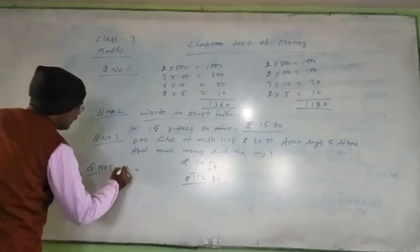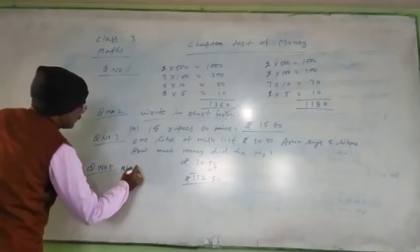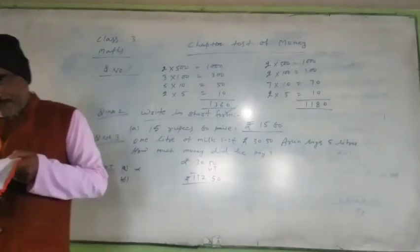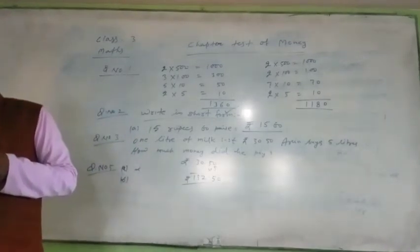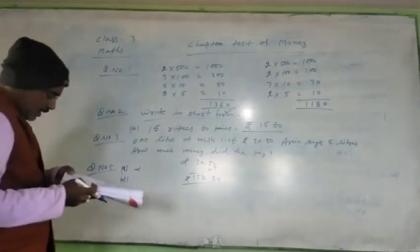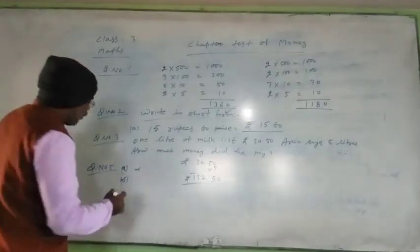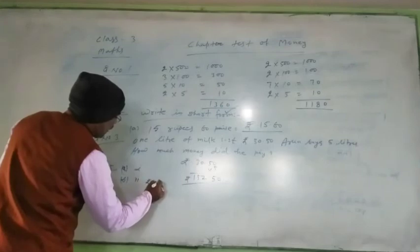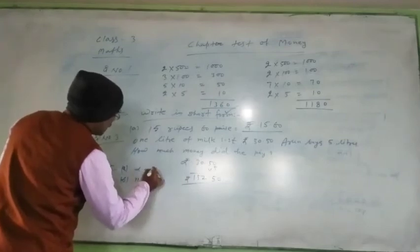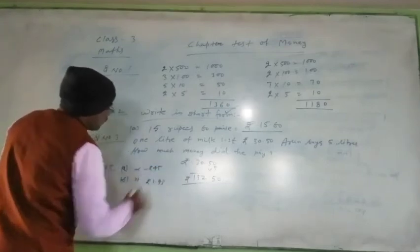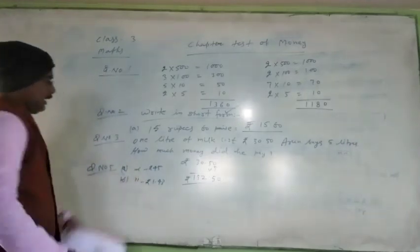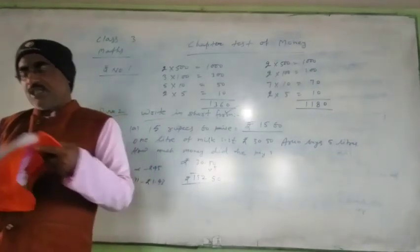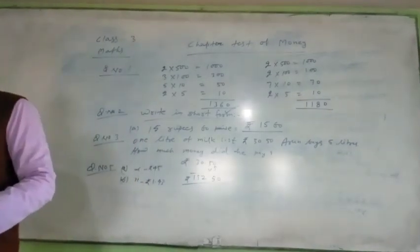Part B: 143 paise is equivalent to - the answer is rupees 1.43, option 2. In this way, your chapter test questions are all solved. I think you all know about this chapter test.